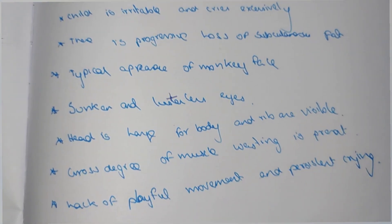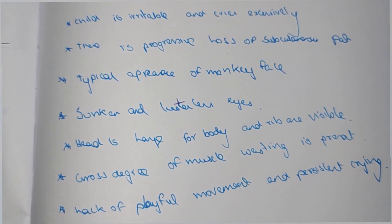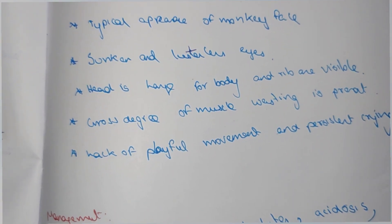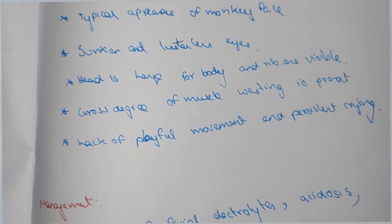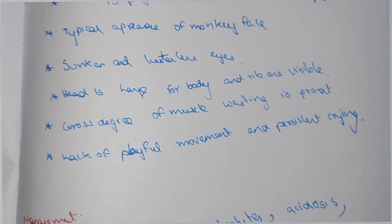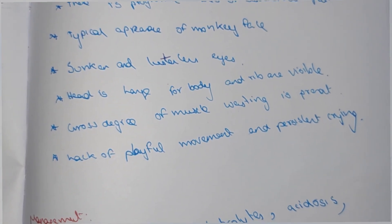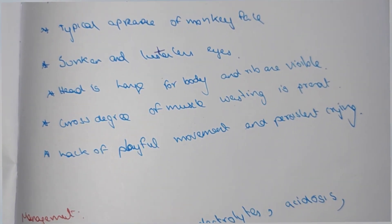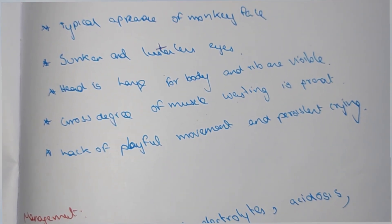The head is large, and the body and ribs are visible. There is lack of playful movement and persistent crying. The body can appear very small.